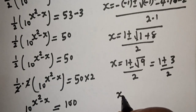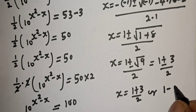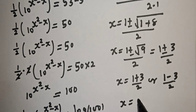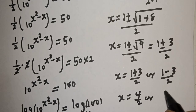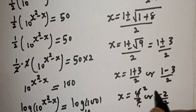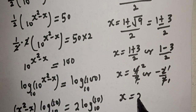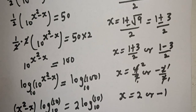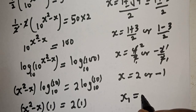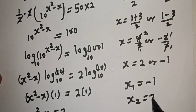So s = (1+3)/2 = 4/2 = 2, or s = (1−3)/2 = −2/2 = −1. Therefore, our final answers are s₁ = −1 and s₂ = 2.